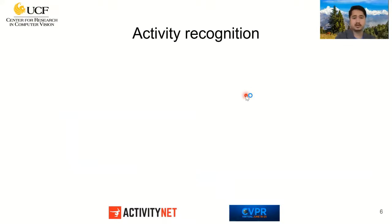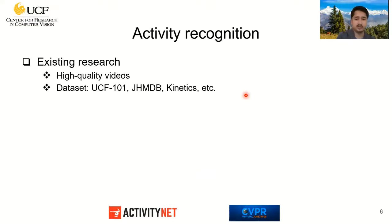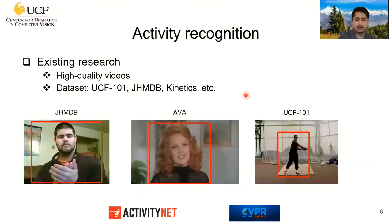Most existing research trying to solve activity recognition in videos uses high-quality videos. Looking at datasets like UCF-101, HMDB, and Kinetics, all the videos are high resolution. Sample video frames from these datasets clearly show the actor performing the action is clearly visible, with no issues of resolution, missing details, or grain.